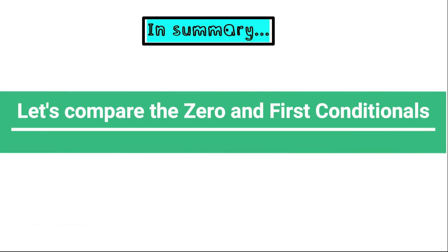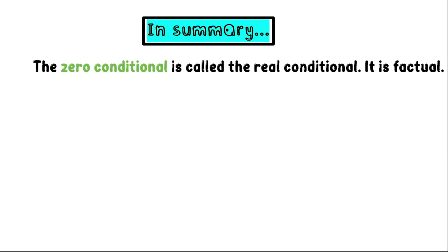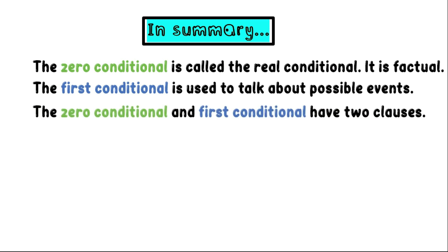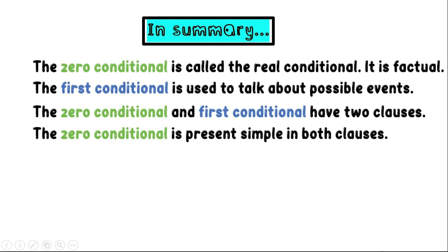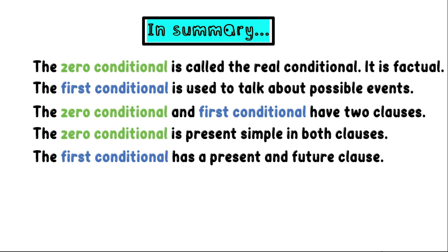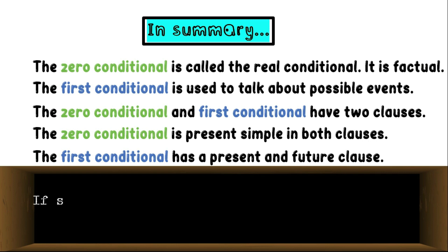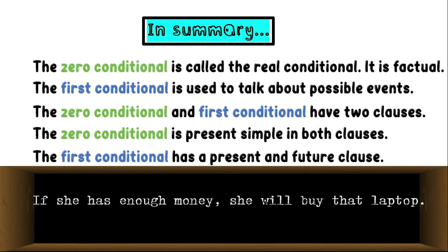So in summary: the zero conditional is called the real conditional — it is factual. The first conditional is used to talk about possible events in the future. Both the zero conditional and first conditional have two clauses. The zero conditional uses present simple in both clauses. As for the first conditional, it has a present clause and a future clause. For example: if she has enough money, she will buy that laptop. This is the first conditional with present simple in the first clause and future simple in the second clause.